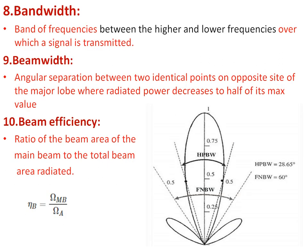The next parameter is bandwidth. We know that bandwidth is some kind of frequency range over which a circuit will work. In the case of an antenna, it is the band of frequencies — the difference between the higher frequency and the lower frequency — over which the antenna will work properly as desired.